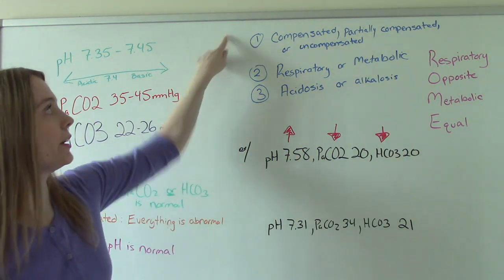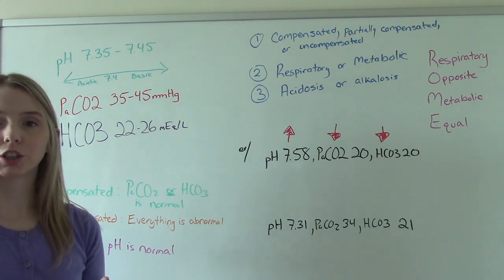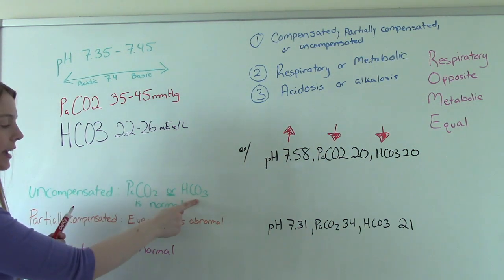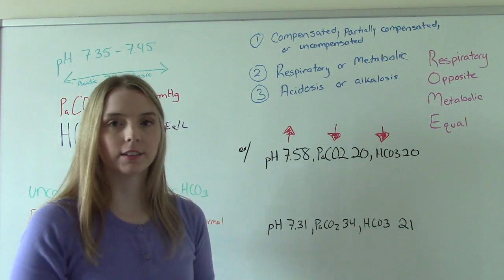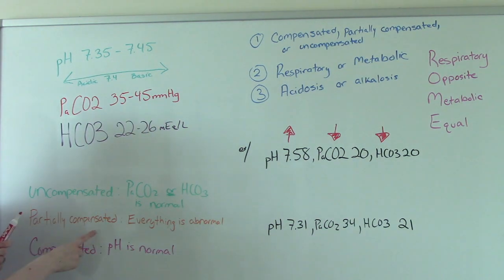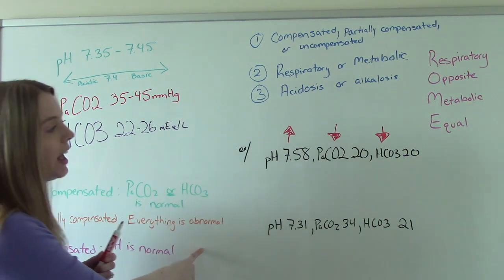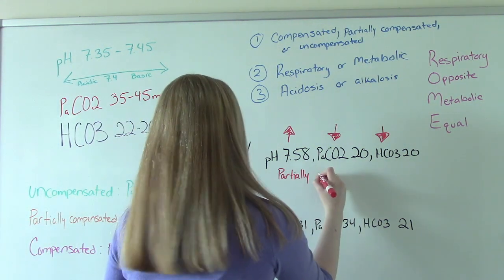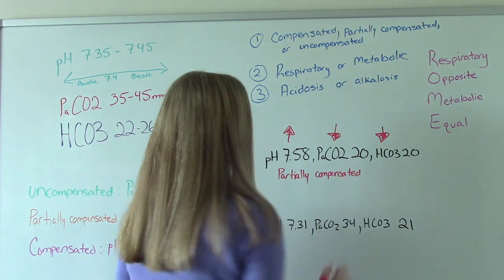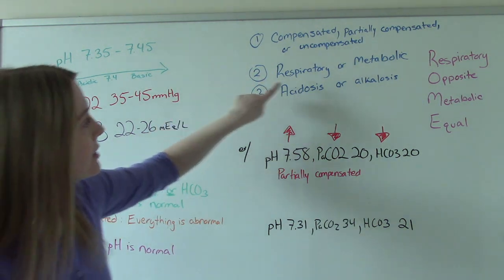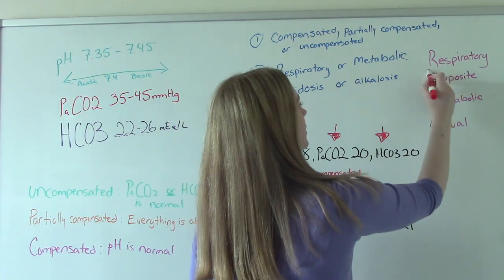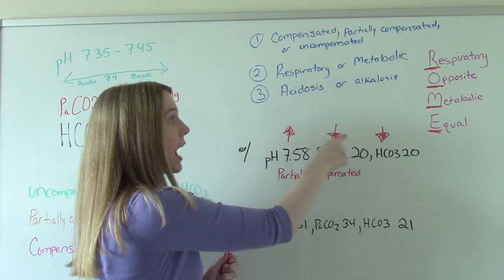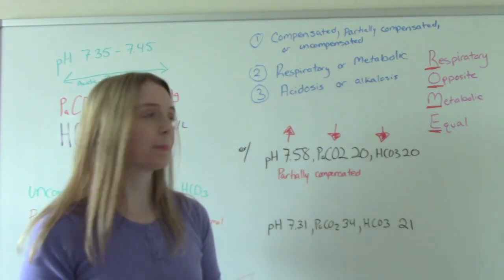Now that we have all this information, we can do our three steps. Step one: is this compensated, partially compensated, or uncompensated? Uncompensated means either CO2 or bicarb is normal — they're not here. In partially compensated, everything is abnormal, and when we look at this, everything is abnormal — so this is partially compensated. Step two: is this respiratory or metabolic? Comparing pH to CO2, they are opposite — pH is up, CO2 is down — so this is respiratory.